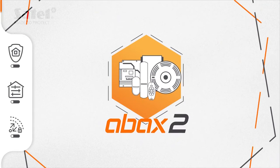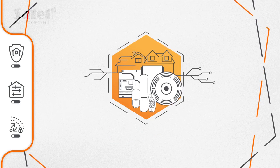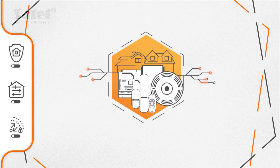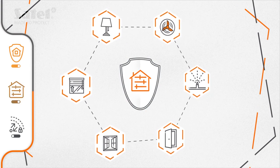ABAX2 is an up-to-date solution that can be successfully used for effective implementation and expansion of even very complex alarm systems. In addition to the security function, it also offers control over many home automation devices.